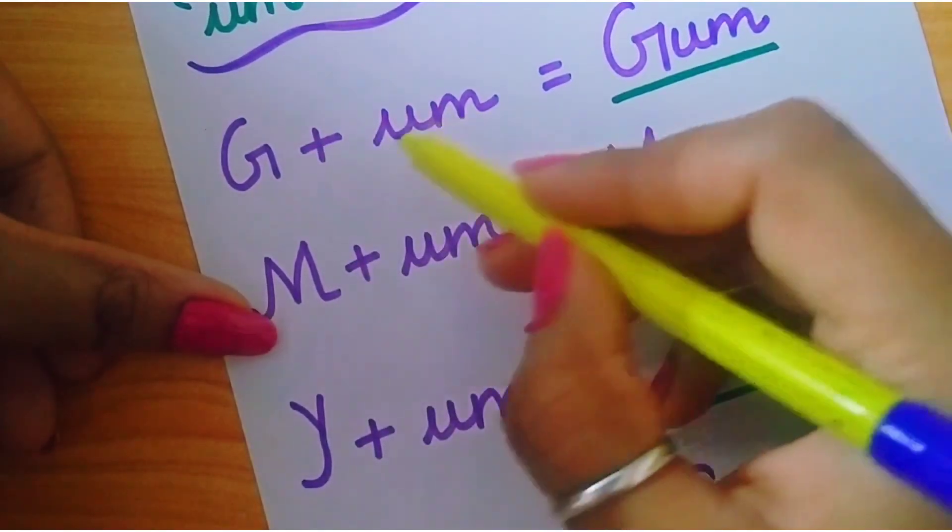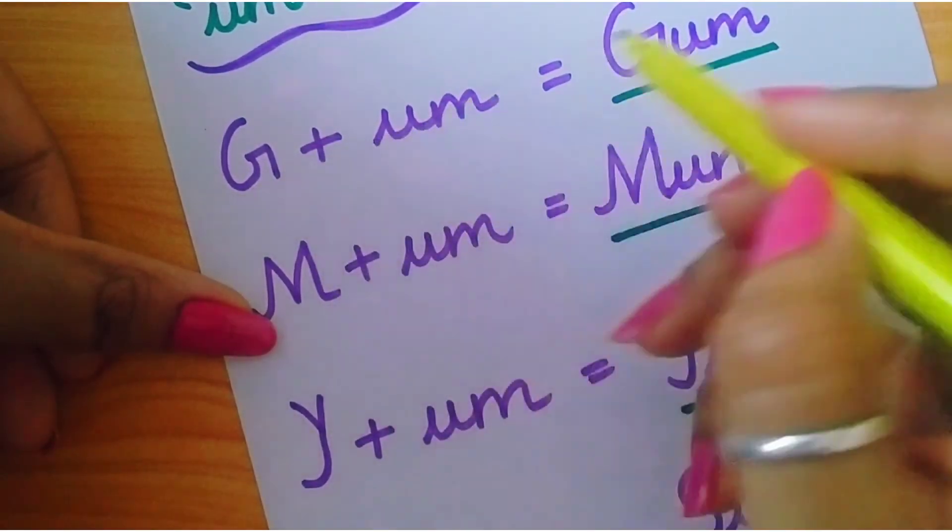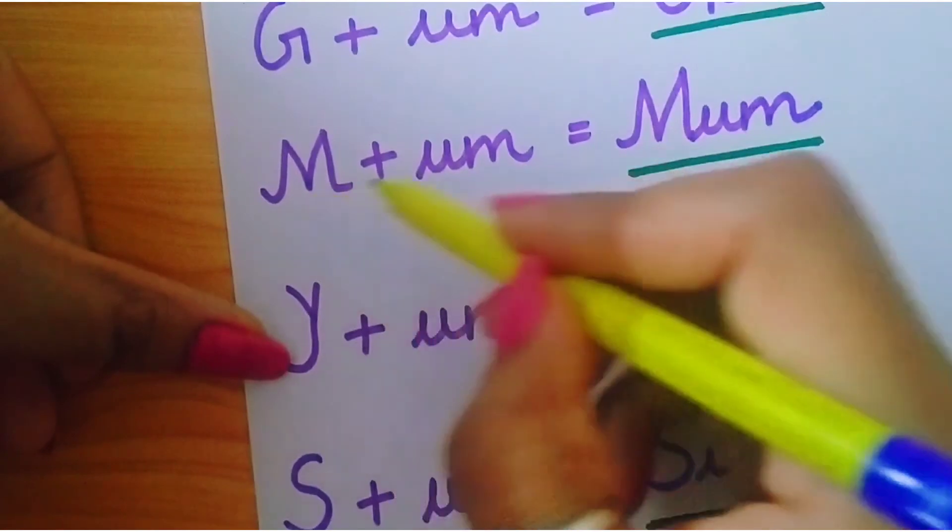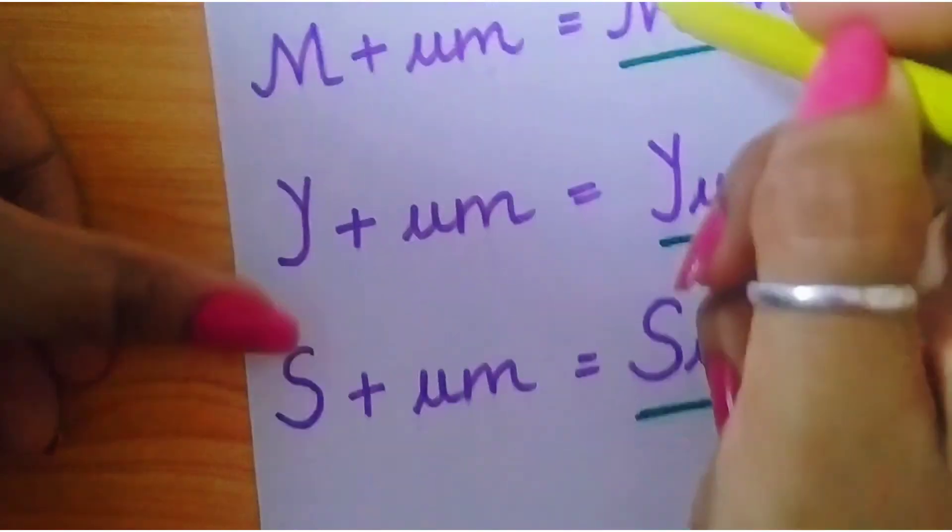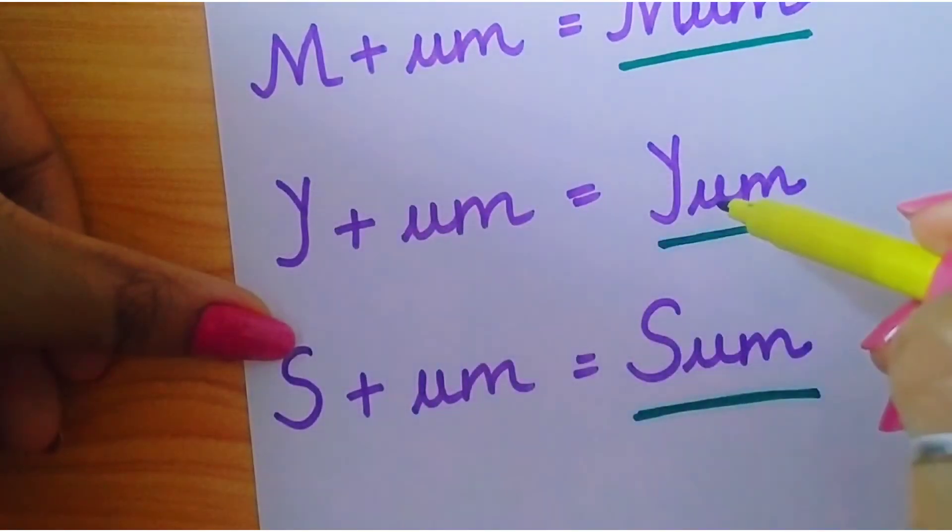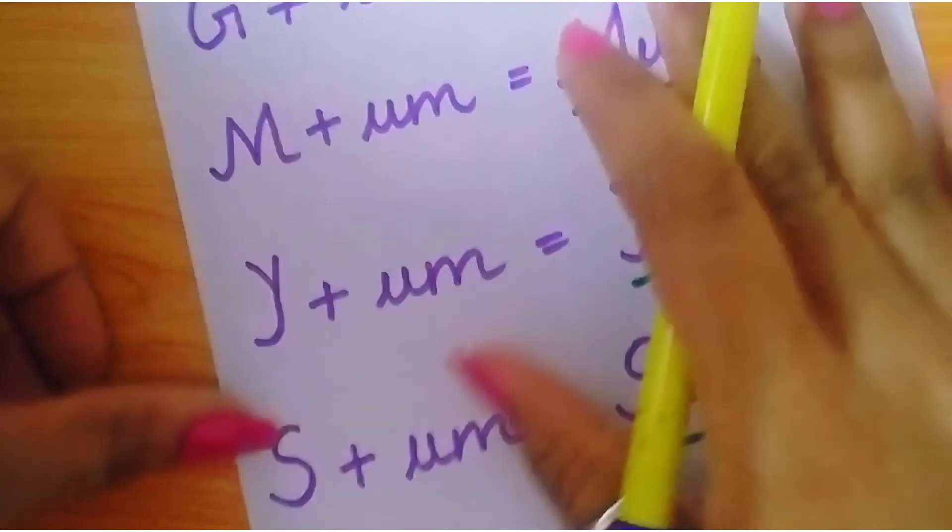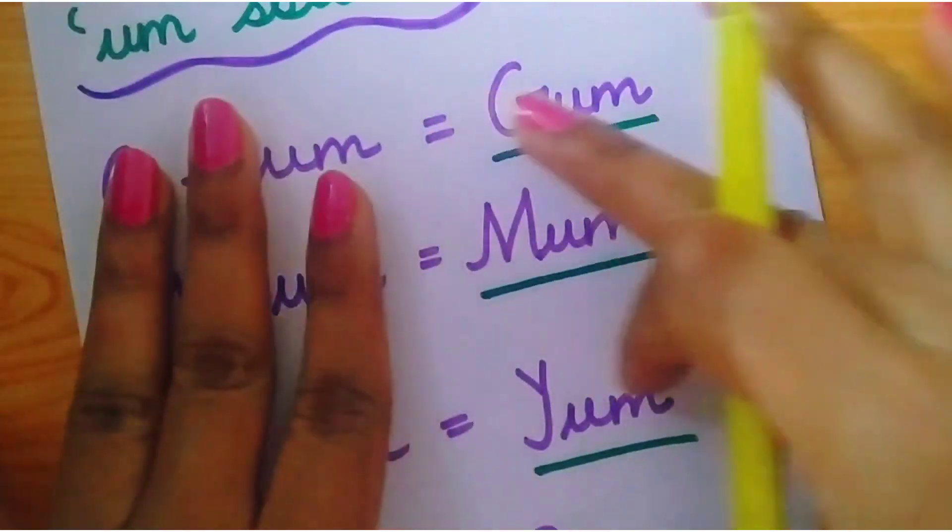um sound words. g-um-gum, m-um-mum, y-um-yum, s-um-sum. When children have these spellings read,